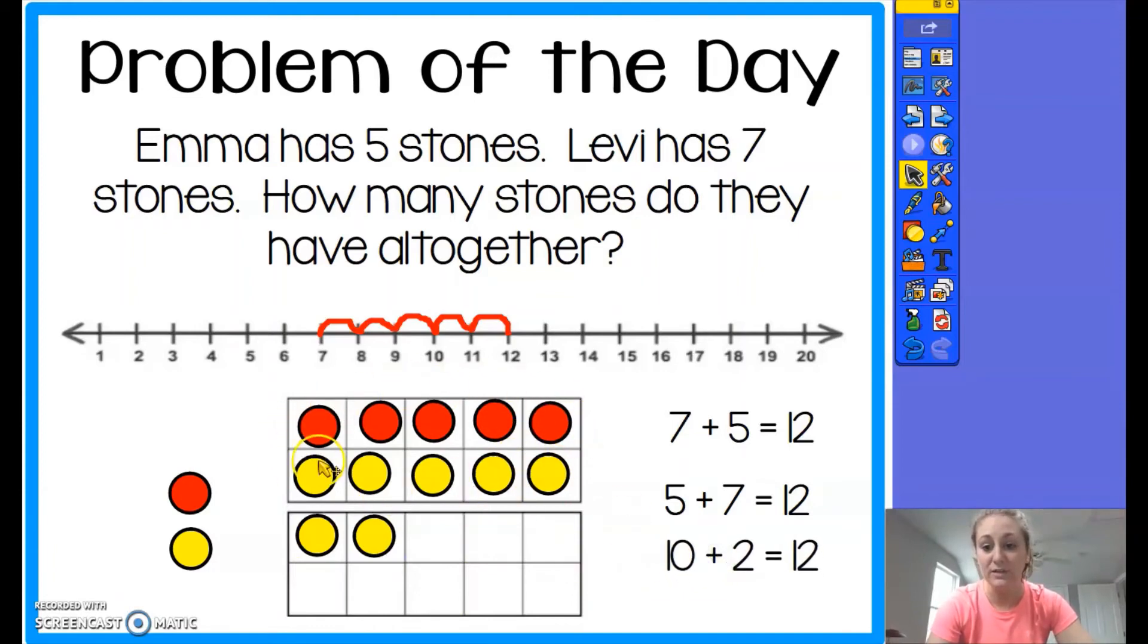Some of you may have said, hmm, I know that this tens frame is full so that is a total of ten. So I can say ten plus the two from down below is the same as twelve as well. So there are lots of different ways that you could have looked at this problem to solve it.